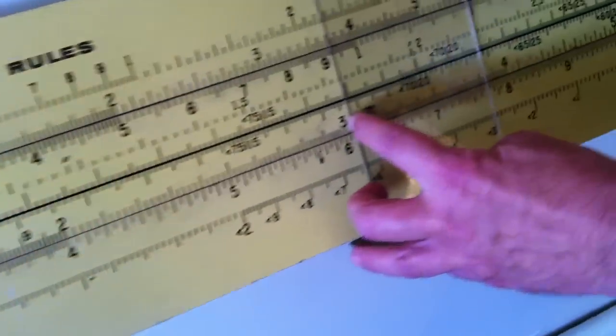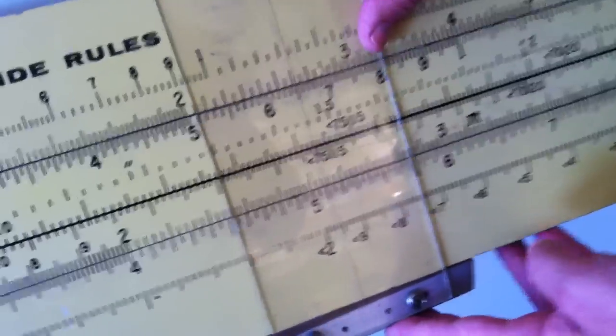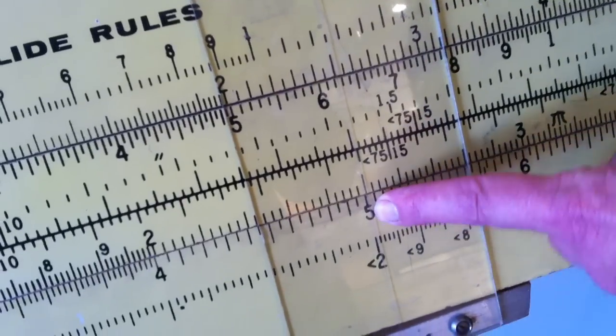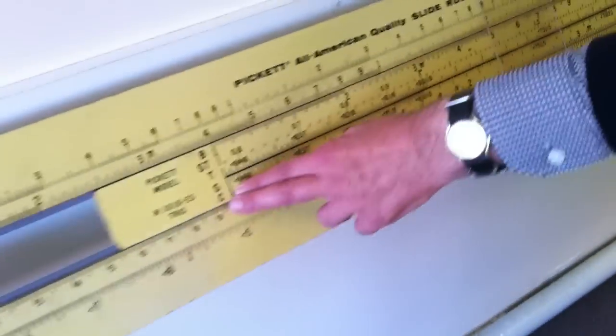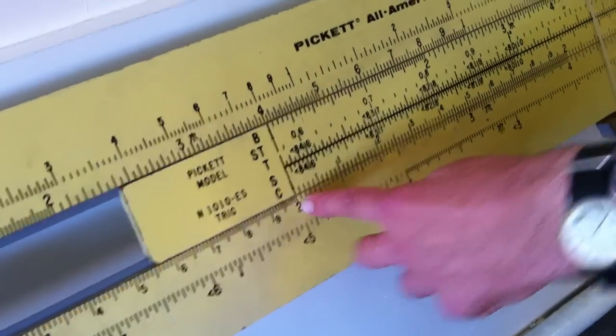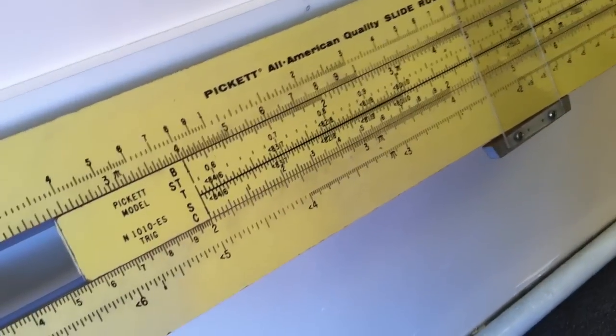So if I find 2.5, 2 times 2.5 is the answer 5. And so having got my slider into the position for 2, anything multiplied by 2 can be read off.